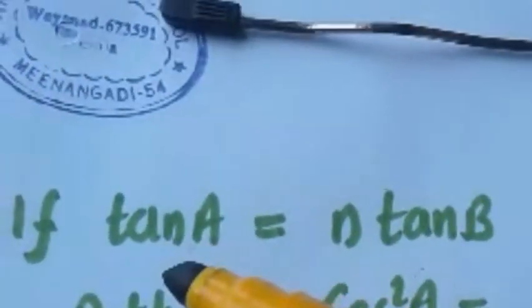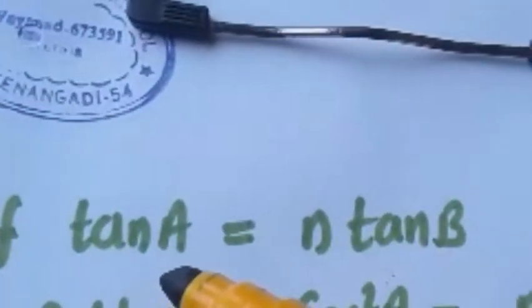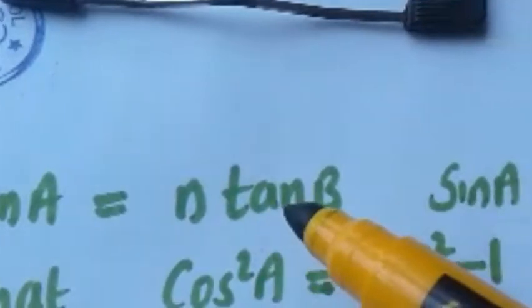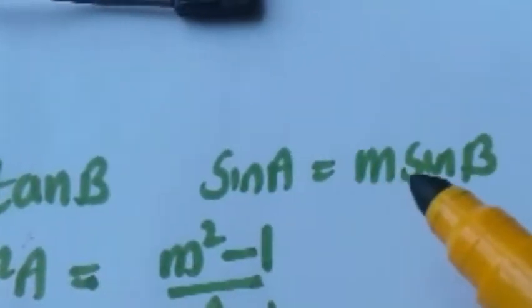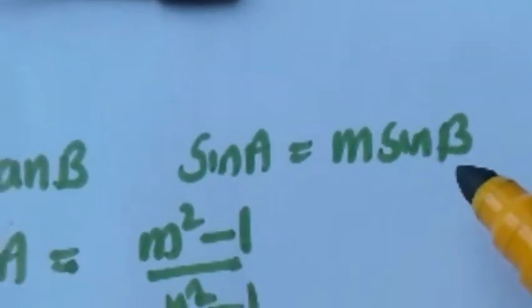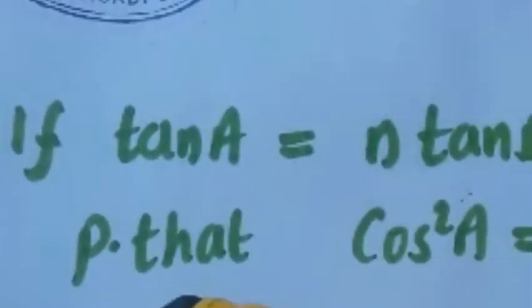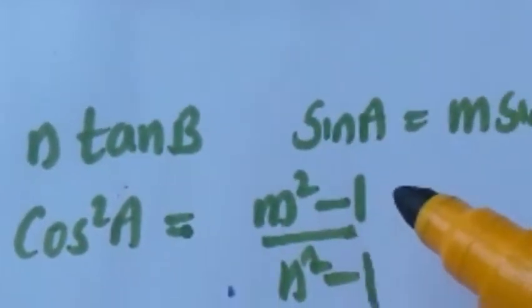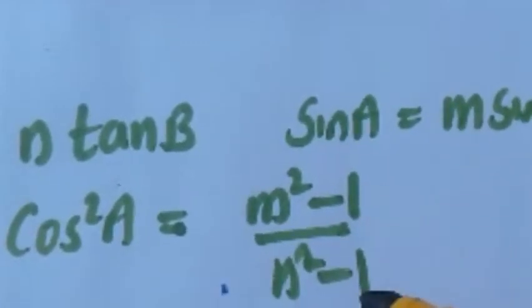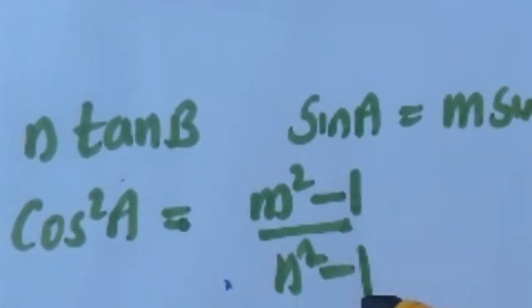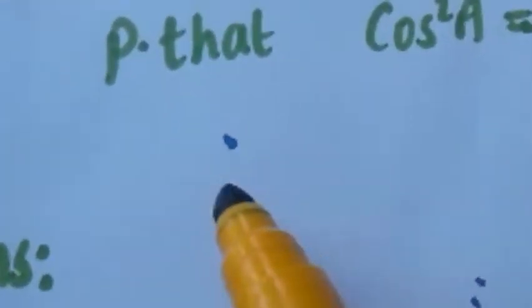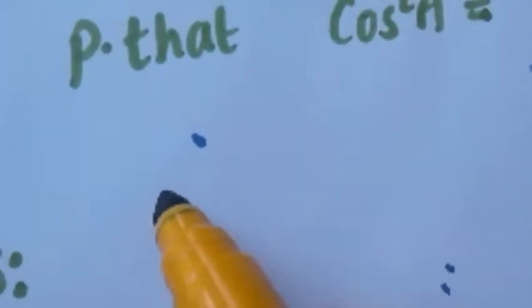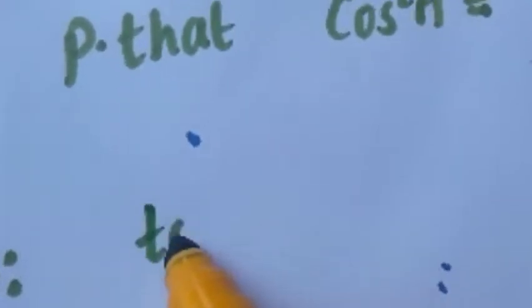Let me repeat the question: if tan A is equal to n·tan B and sin A is equal to m·sin B, we are supposed to prove that cos²A is equal to (m²-1)/(n²-1). Let me try to prove this question, so what are the given things?